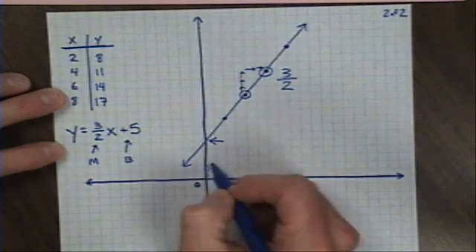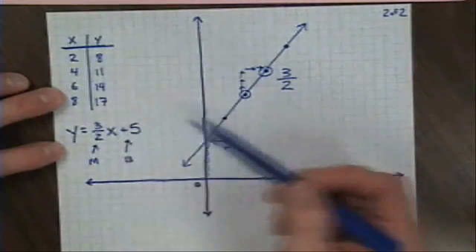Let's count. 1, 2, 3, 4, 5. That means that this line, this equation, and this table, they are all the same pattern.